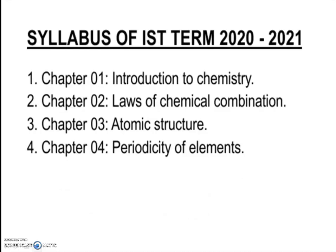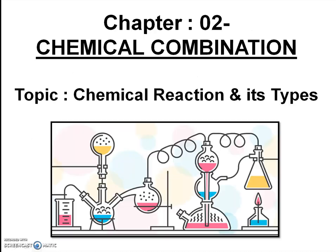This is your syllabus for the first term 2020-2021, which includes four chapters: Chapter 1, Introduction to Chemistry; Chapter 2, Laws of Chemical Combination; Chapter 3, Atomic Structure; and Chapter 4, Periodicity of Elements.